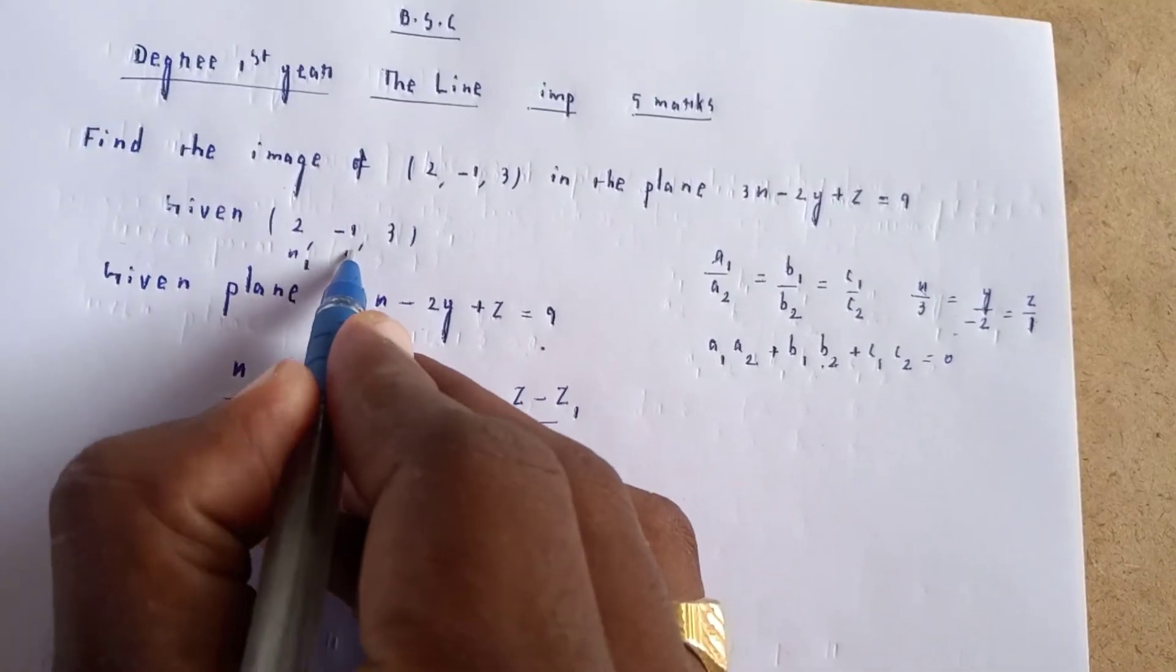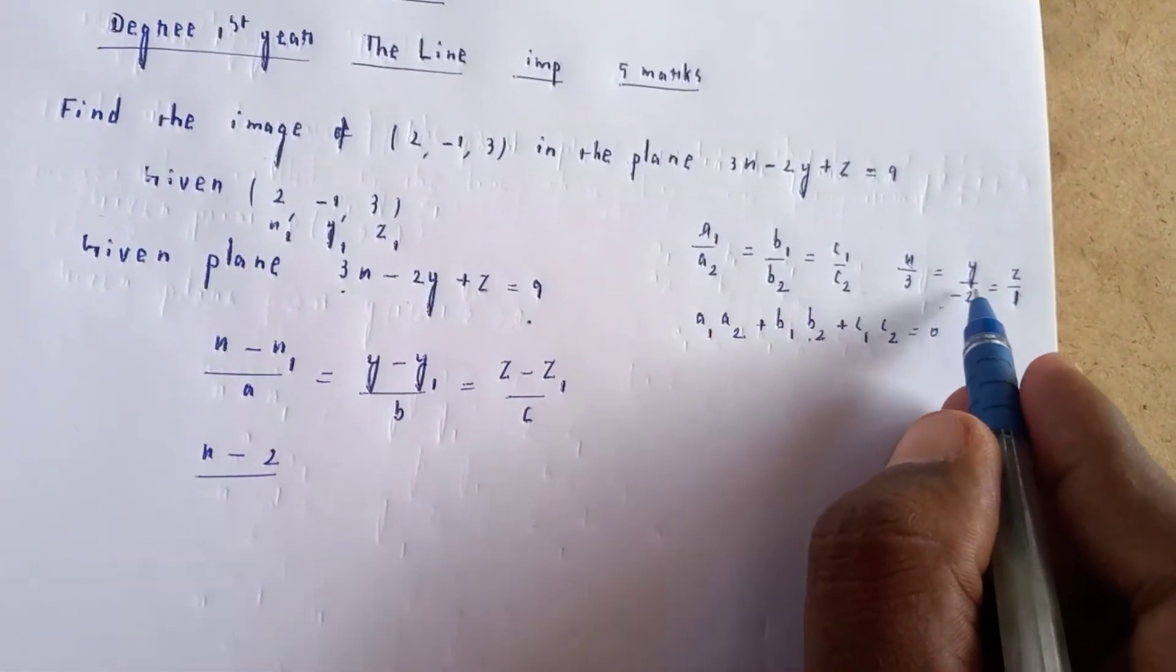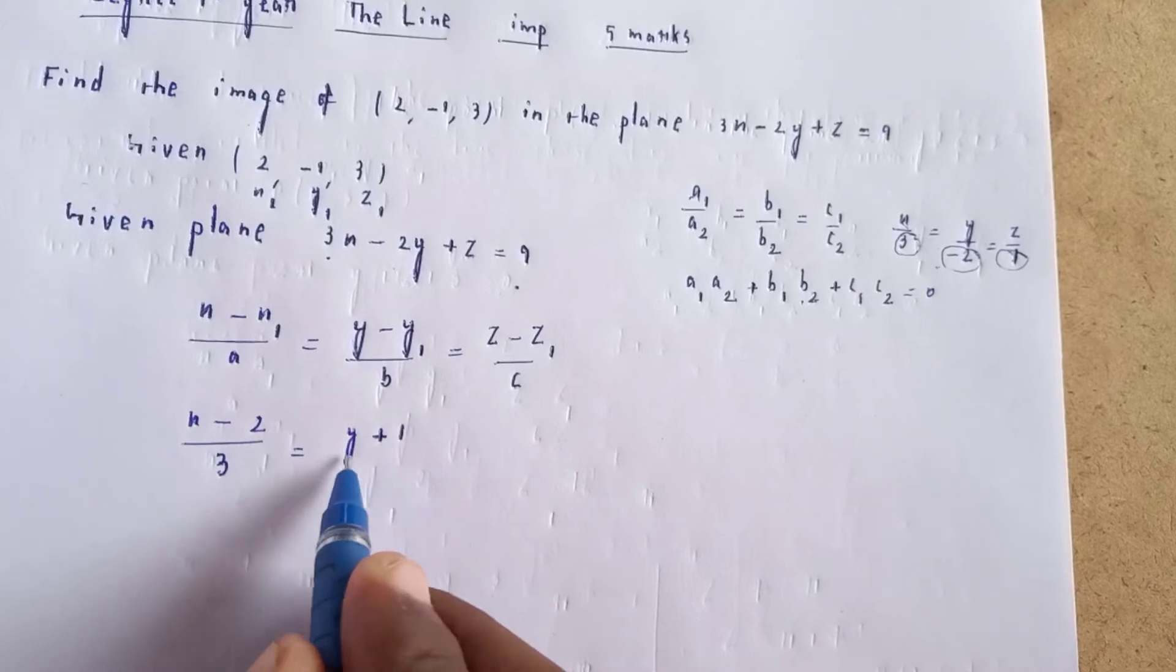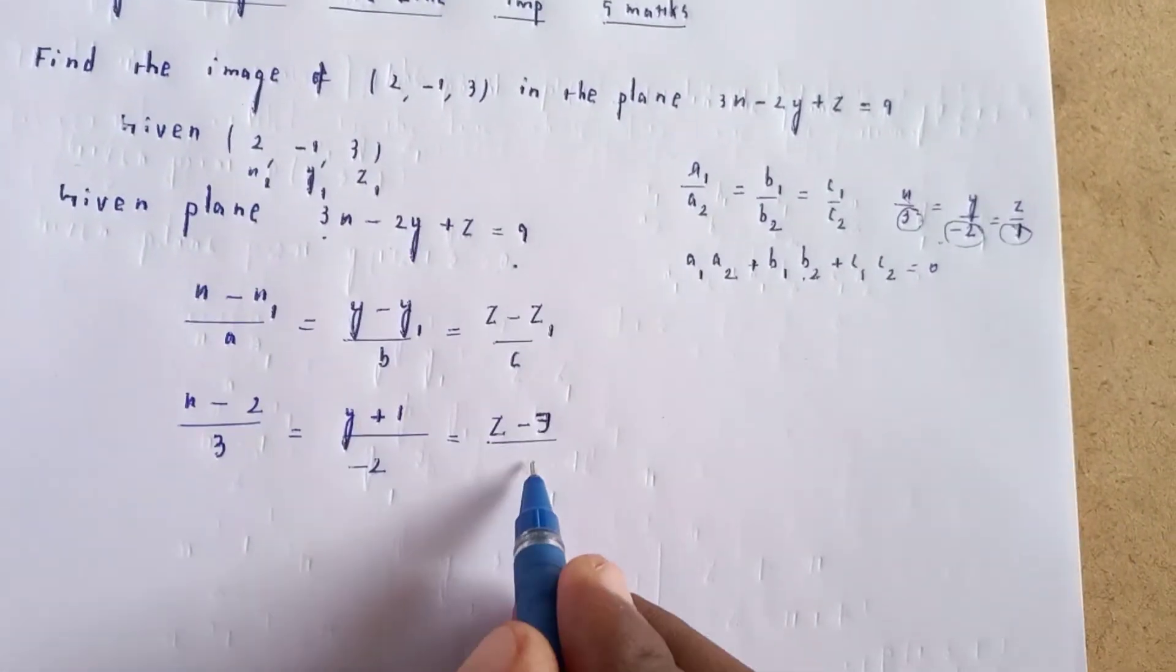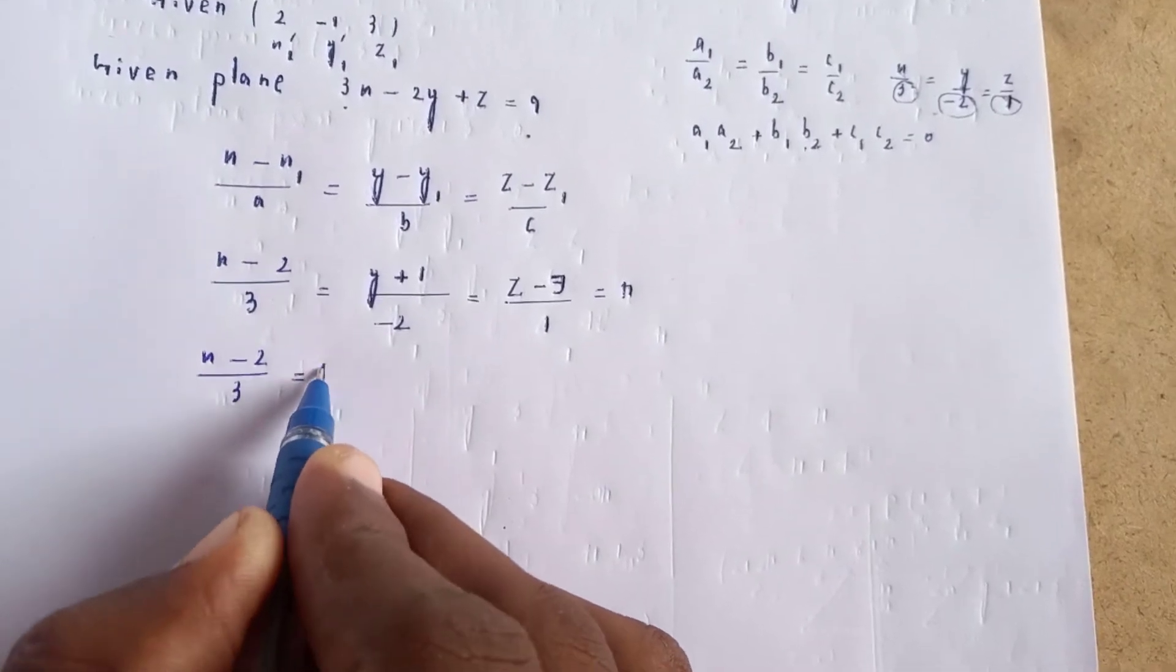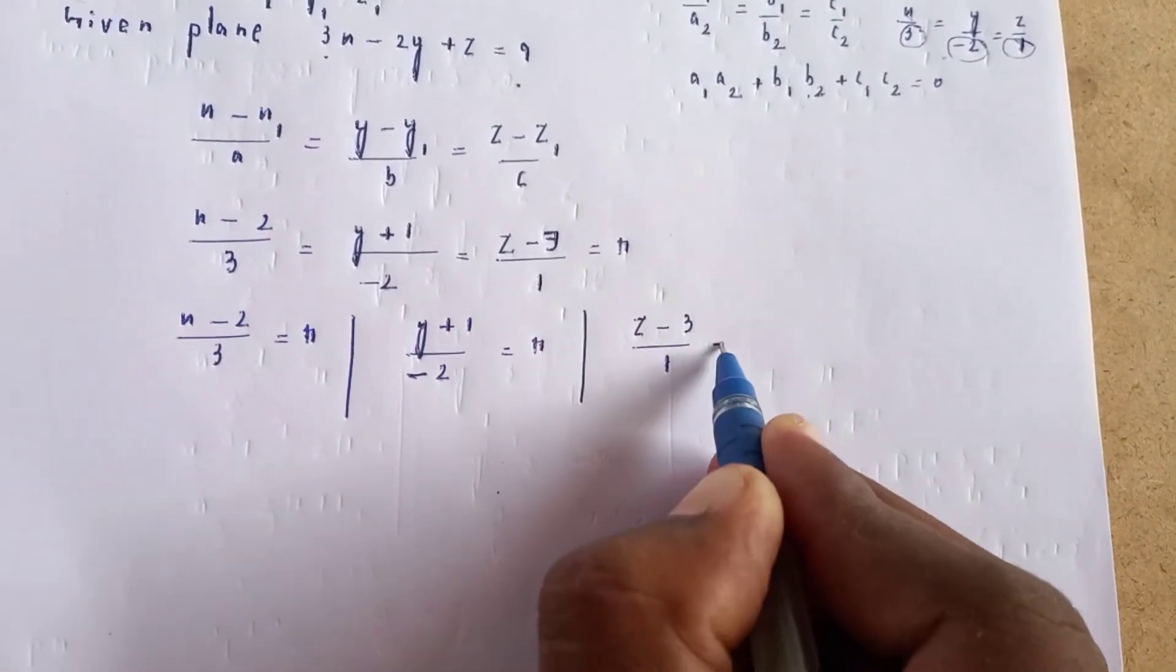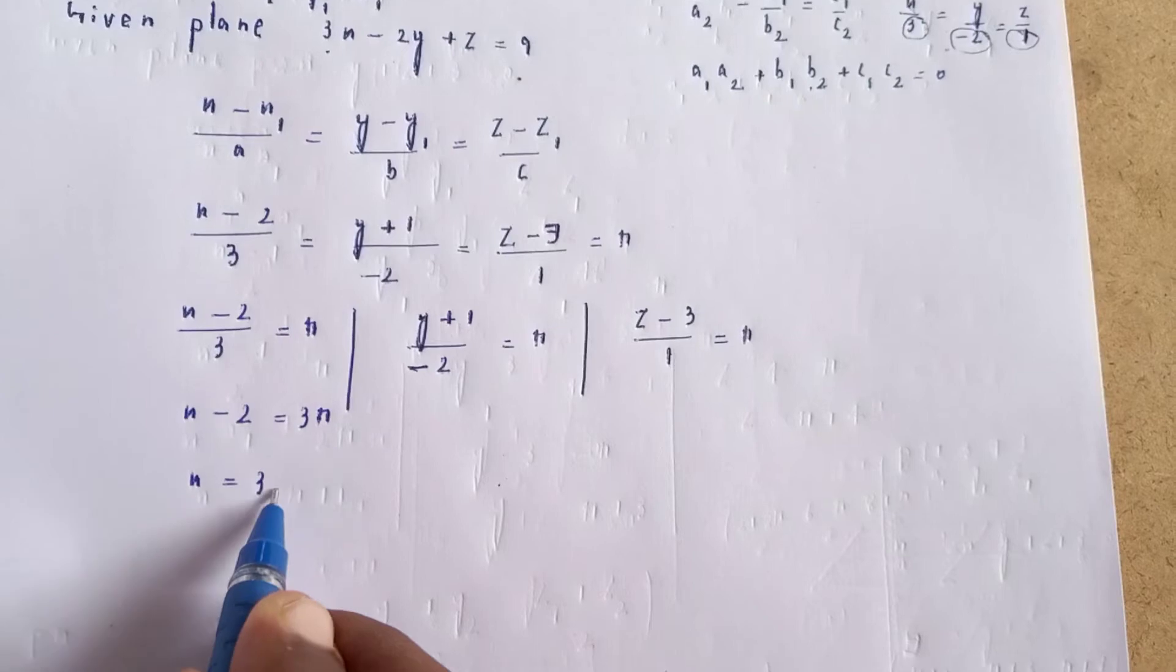Substituting the point (2, -1, 3) and direction ratios (3, -2, 1), we get: (x - 2)/3 = (y + 1)/(-2) = (z - 3)/1 = r. From this, x - 2 = 3r, so x = 3r + 2.